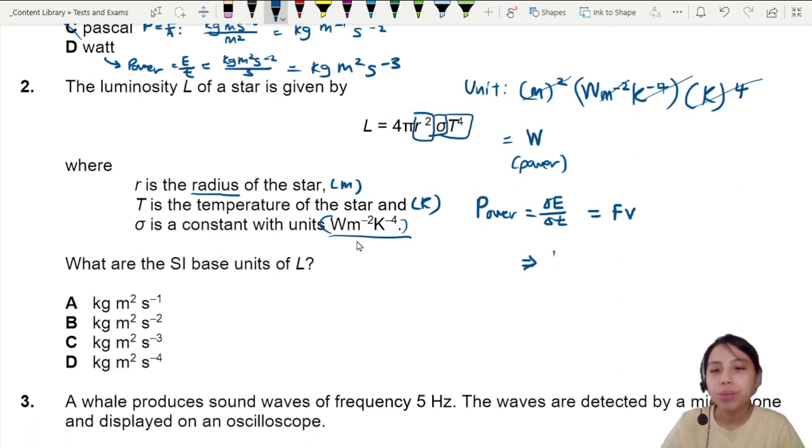So the unit will be kg for mass times acceleration, and velocity is meter per second. That will give us kg meter squared second to the negative 3. So that is kg meter squared second to the negative 3.